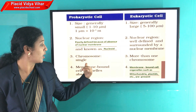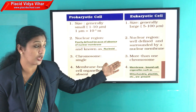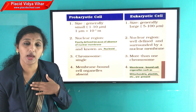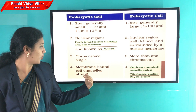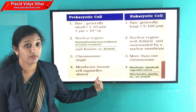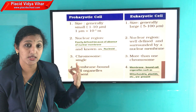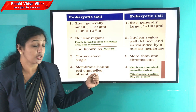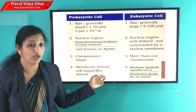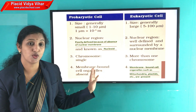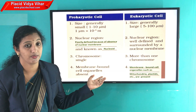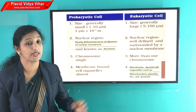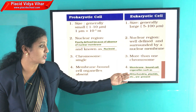Third, prokaryotic cells always have a single chromosome, but eukaryotic cells have more than one chromosome — for example, in human beings we have 23 sets of chromosomes. Fourth, membrane-bound organelles are absent in prokaryotes. There are three types of organelles: double membrane-bounded, single membrane, and membrane-less. Bacterial cells have ribosomes, which have no membrane structure. But eukaryotic cells have different types of membrane-bounded organelles such as nucleus, mitochondria, and plastids.